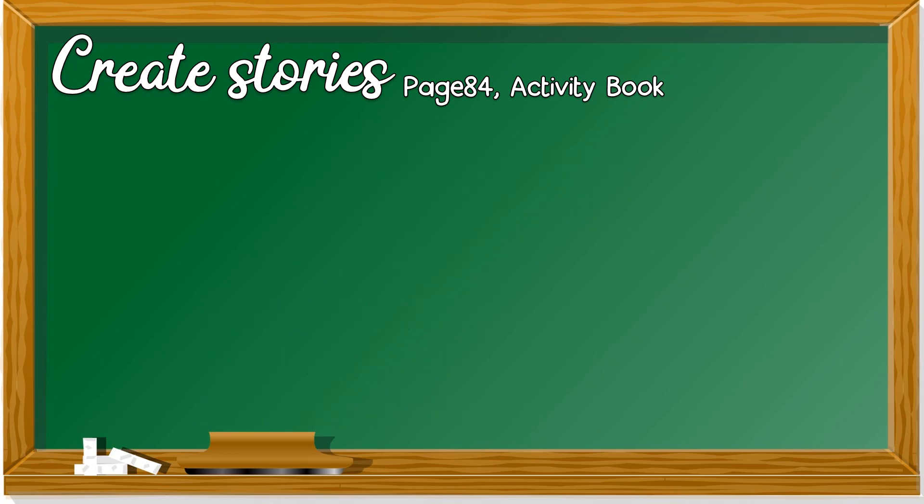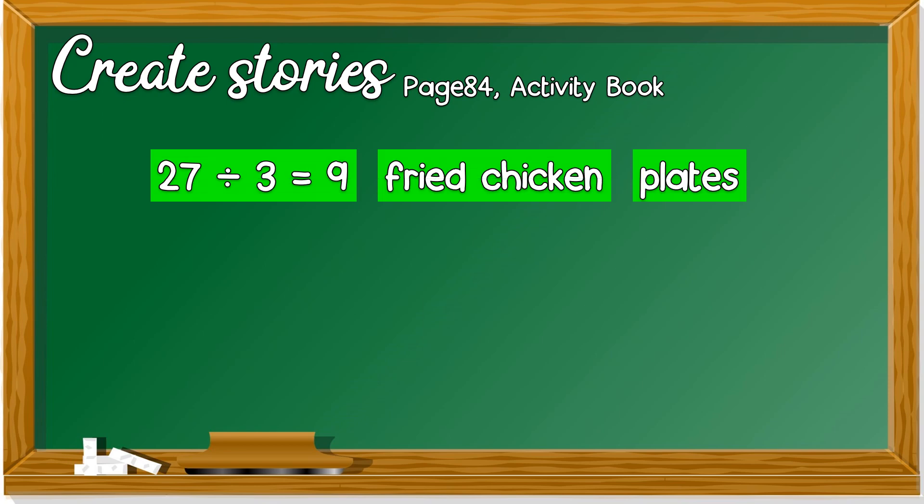Number three. Given number sentence is 27 ÷ 3 = 9. Keywords: fried chicken and plates. You know why it's fried chicken, right? Do you like to eat fried chicken? And there's plates. You need to create a story based on this.